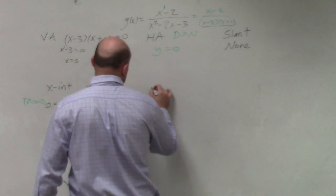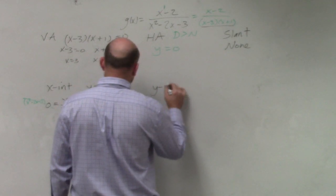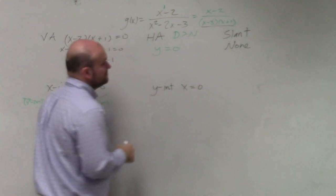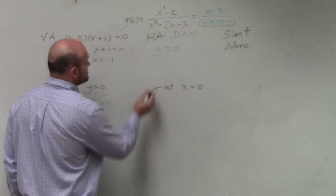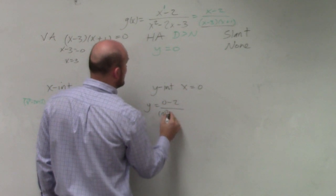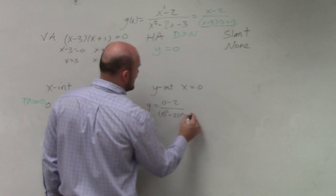To find the y-intercept, if x equals 0 for the y-intercept, so I'll just make that y, and then I'll just do 0 minus 2 over 0 squared minus 2 times 0 minus 3.